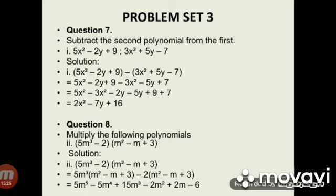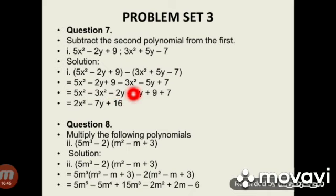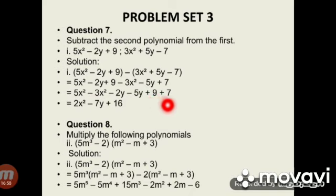Question 7: Subtract the second polynomial from the first. Subdivision 1: First polynomial is 5x² minus 2y plus 9, and second polynomial is 3x² plus 5y minus 7. Solution: (5x² minus 2y plus 9) minus (3x² plus 5y minus 7) equals 5x² minus 2y plus 9 minus 3x² minus 5y plus 7, which equals 2x² minus 7y plus 16.